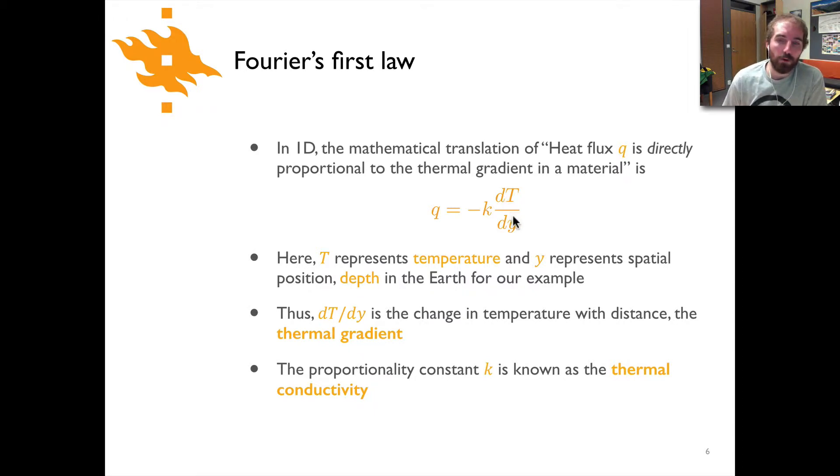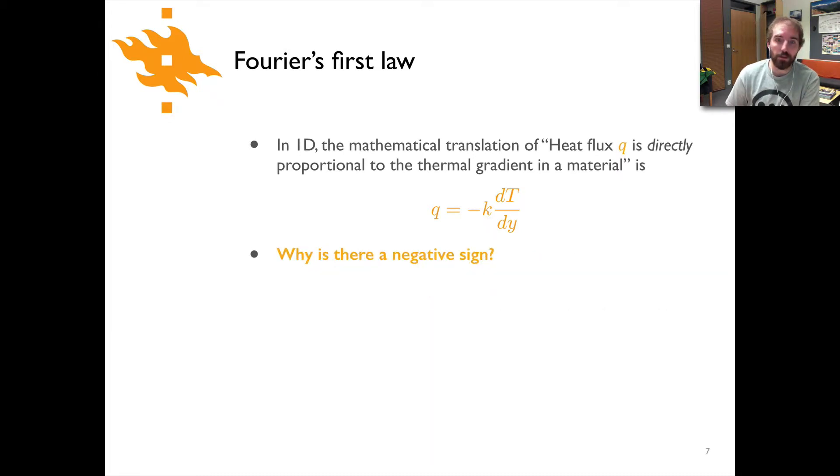Here T represents temperature, y would represent depth in the earth in the cases that we're going to consider, and so dT/dy would be the change in temperature with depth or the thermal gradient. K is a proportionality constant that's known as the thermal conductivity and Q again is heat flux.